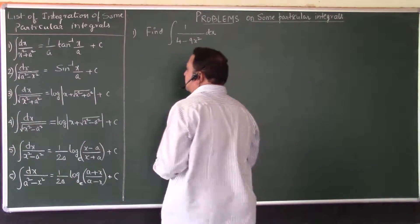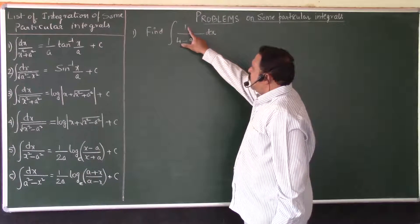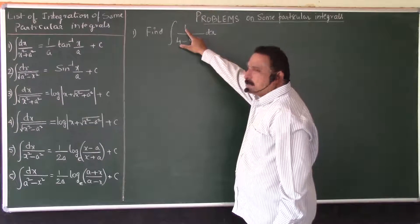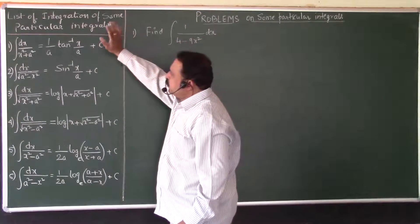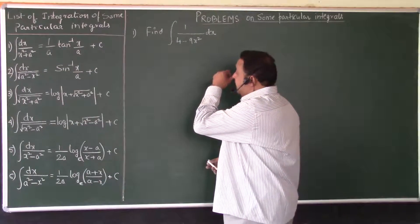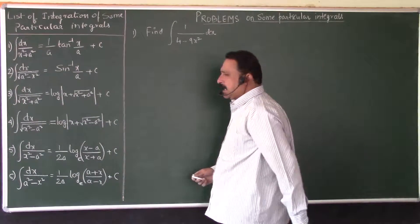Now the numerator is just dx, 1 into dx is dx. So when the numerator is just plain dx, we should understand that it will be one of these particular integrals. Now you have to identify which particular integral it is.